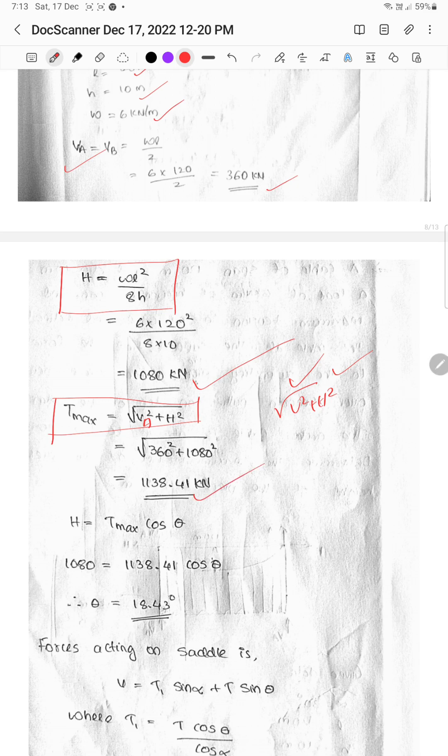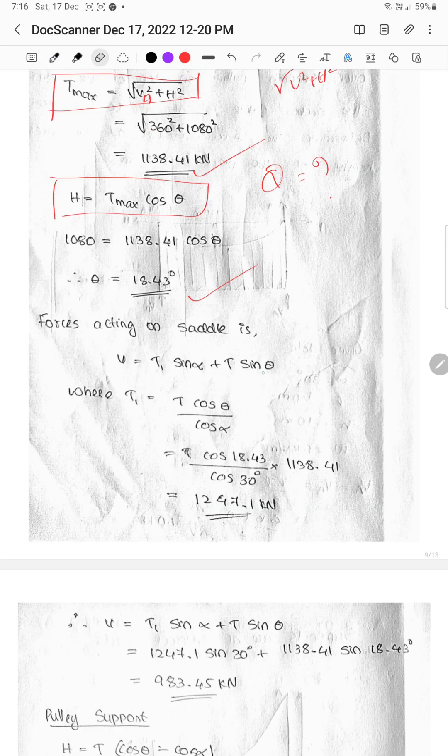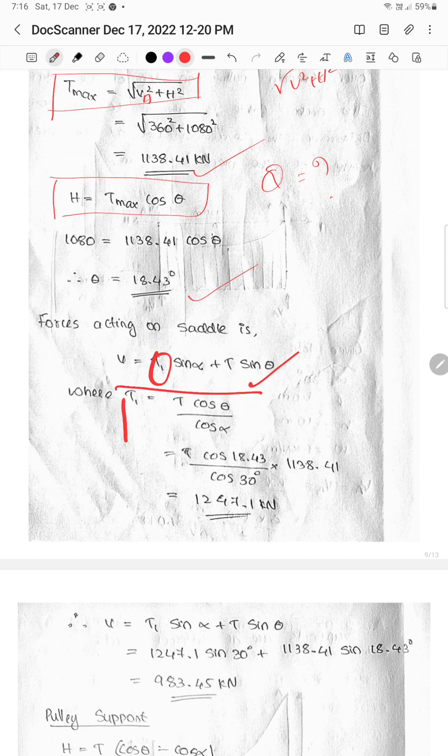Next, calculate theta. Theta is equal to T max cos theta. For vertical forces, V is equal to T1 sin alpha plus T sin theta. Therefore, T1 is equal to T cos theta divided by cos alpha.